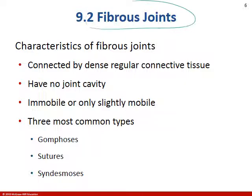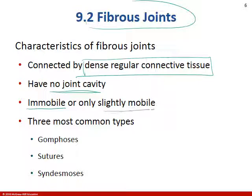Fibrous joints are held together by dense regular connective tissue. There's no joint cavity — you're only going to see that in synovial joints. These are immobile or slightly mobile, so we're talking about synarthroses or amphiarthroses. There are three most common types and we're going to go through each one.